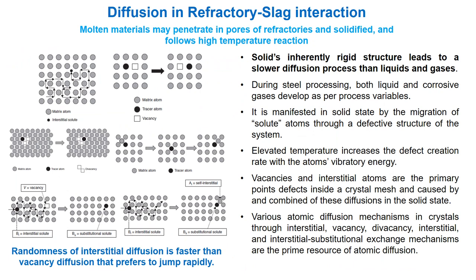Inward apparent diffusion is a prominent phenomenon during the sintering of particles, but this may also happen when molten materials penetrate the pores of refractories and solidify, following high temperature reactions between refractory and foreign substances. This expedites microstructure alteration of the refractories and eventually leads to corrosion.